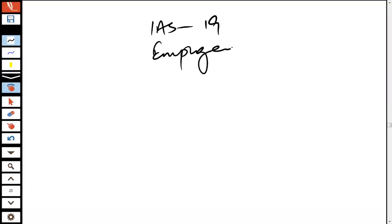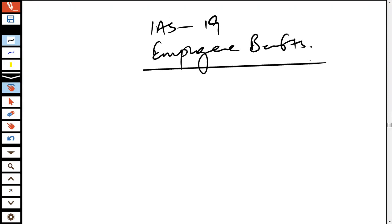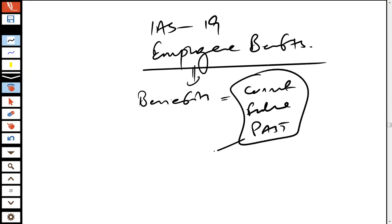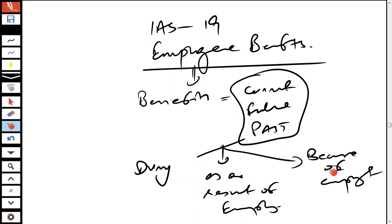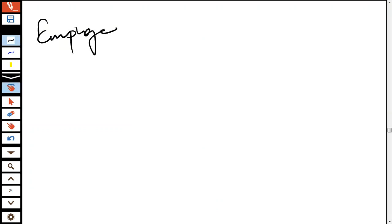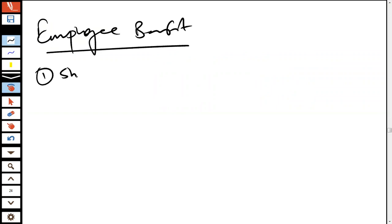The next accounting standard in this series is IAS 19 employee benefits. IAS 19 employee benefits refers to the benefits provided to current, future, or past employees during employment, as a result of employment, or because of employment. Employee benefits are of four types.